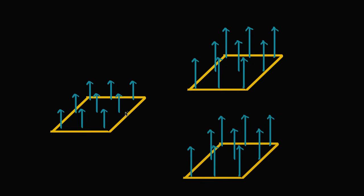It becomes interesting if we actually change the flux going through the surface. Both pictures shown here depict the same scenario where we have increased the flux. At every point on the surface defined by the wire, the magnetic field has now gotten stronger. We use the Greek letter phi to denote flux, and here the flux of the magnetic field has gone up.